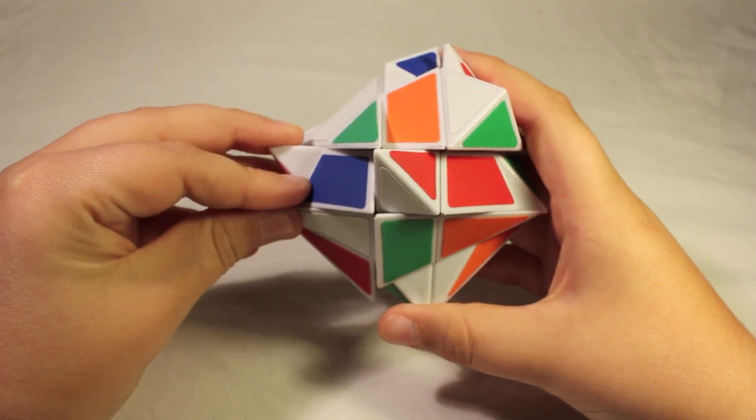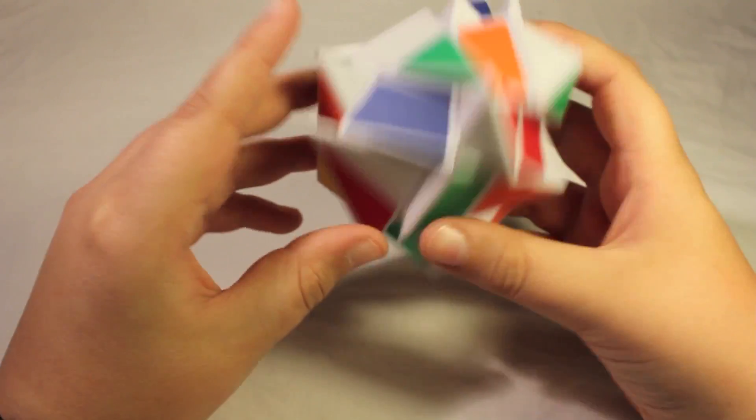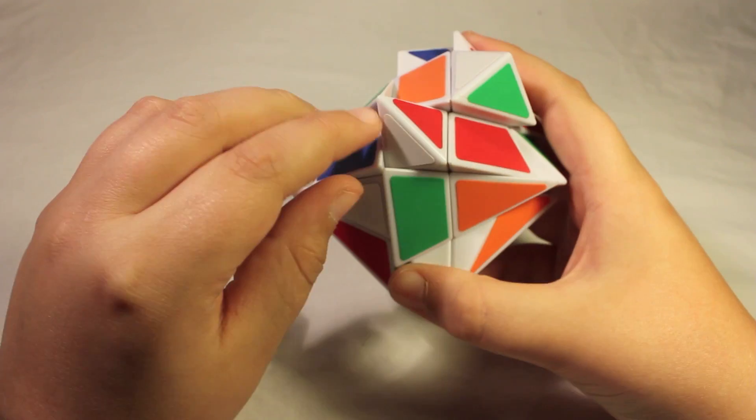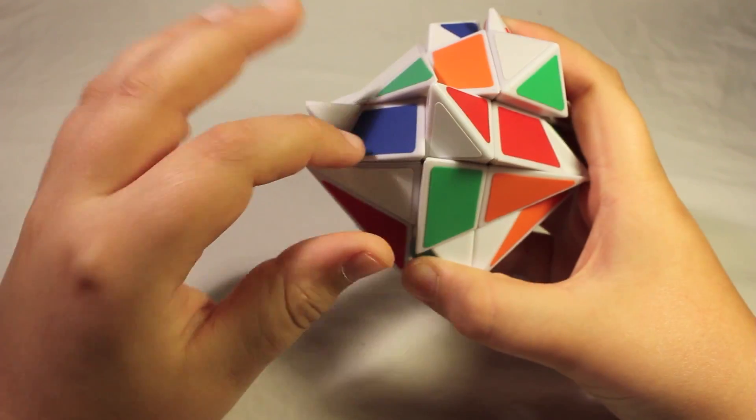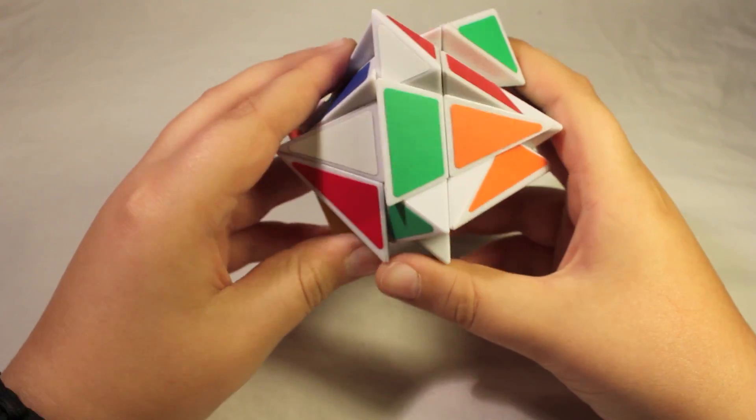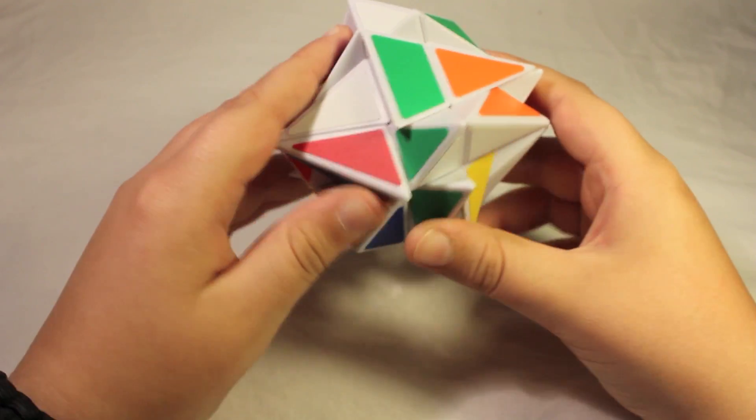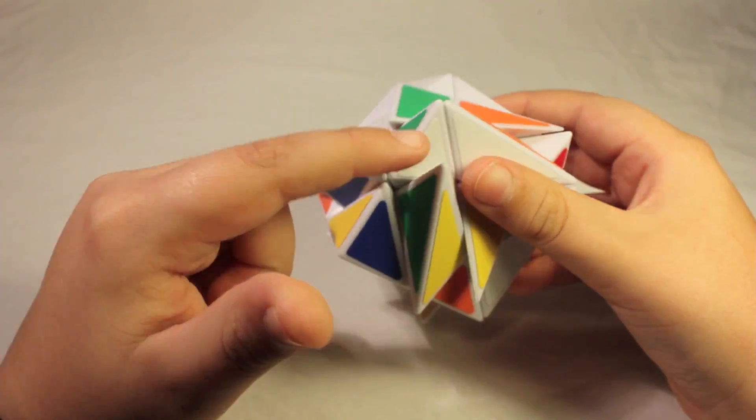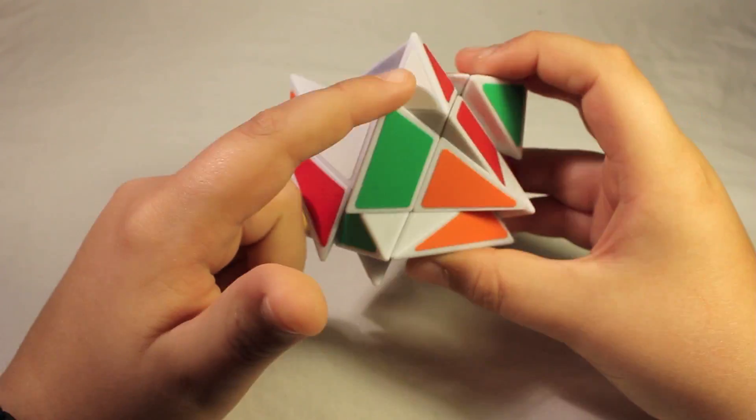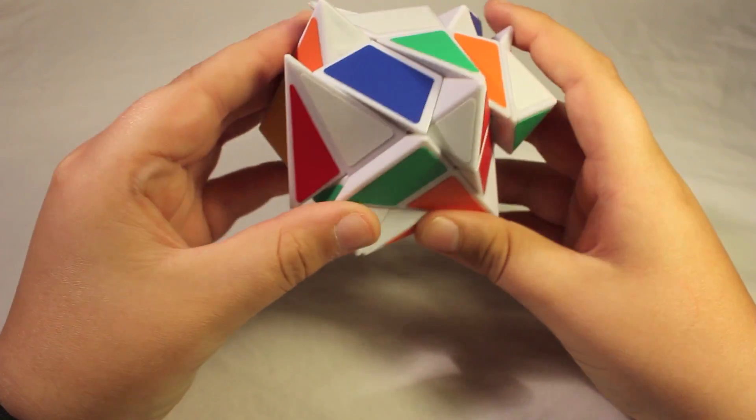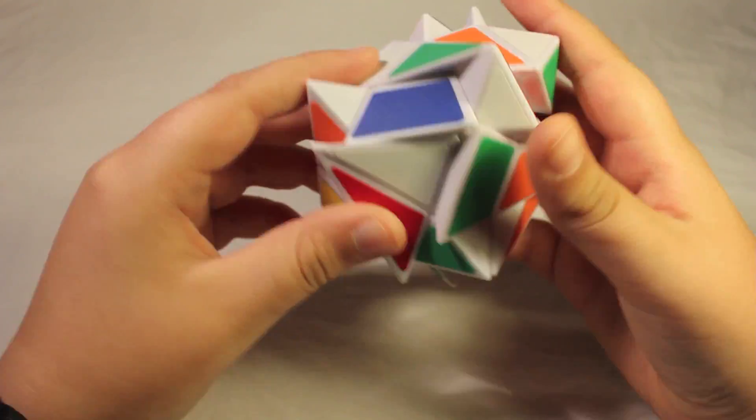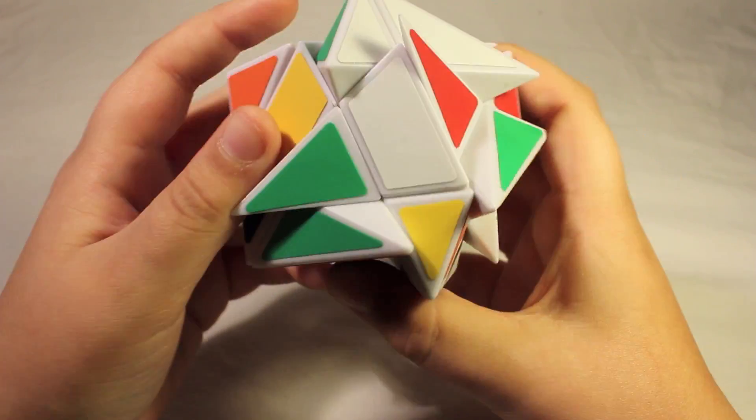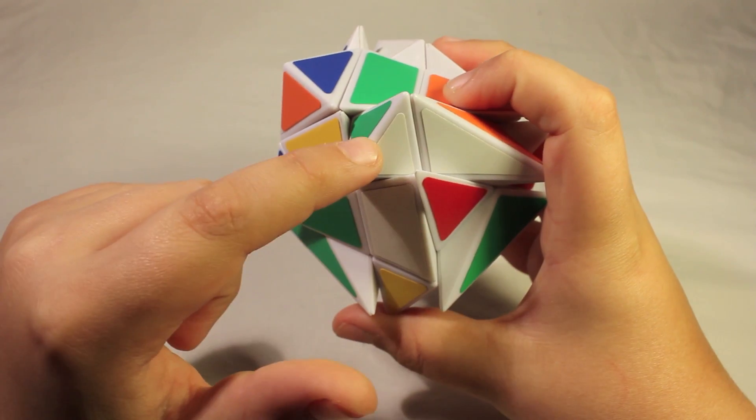So the first thing that I do is I find which side I'm going to do it. And I usually do the red and white center to start with to build our cross on. Now I usually start with the white edge piece. And so that needs to go right here in between the white, the other center that has white on it. So we locate the white edge. It's right here. Bring it down to the bottom layer.